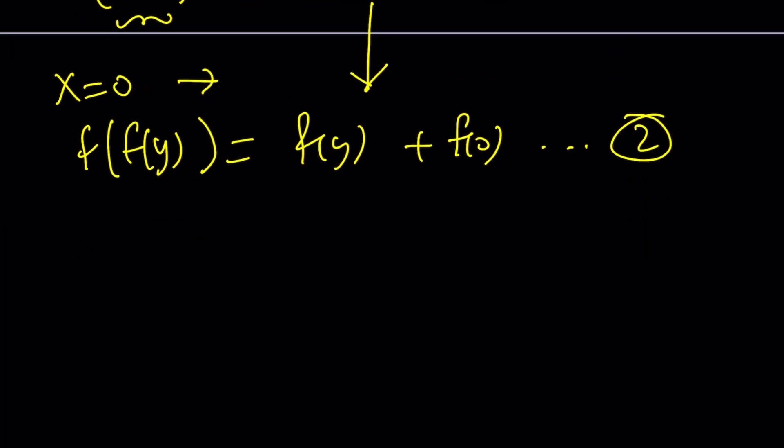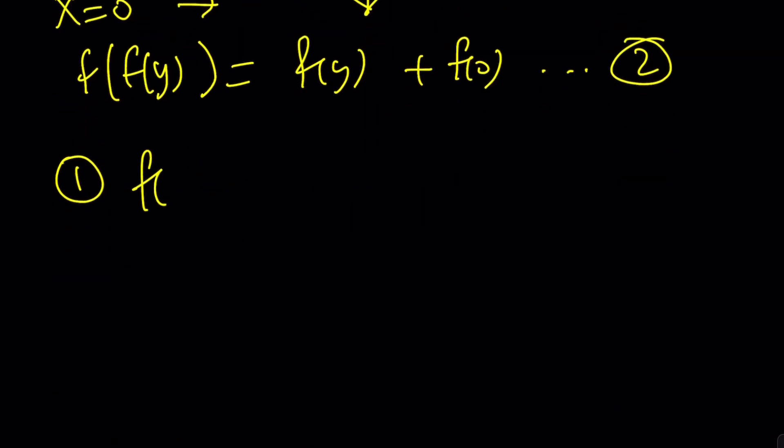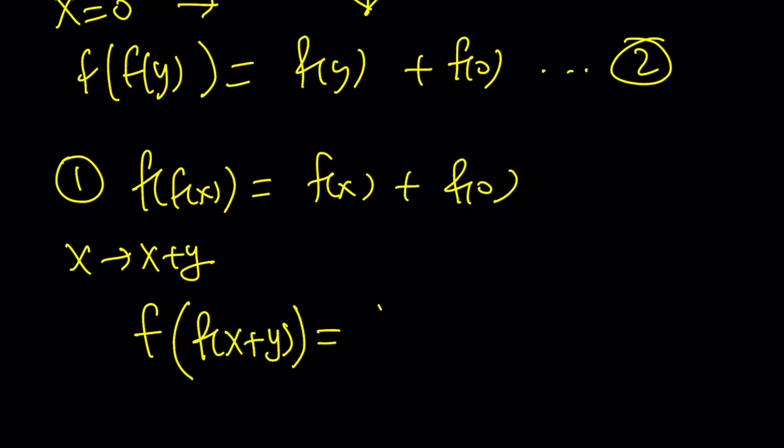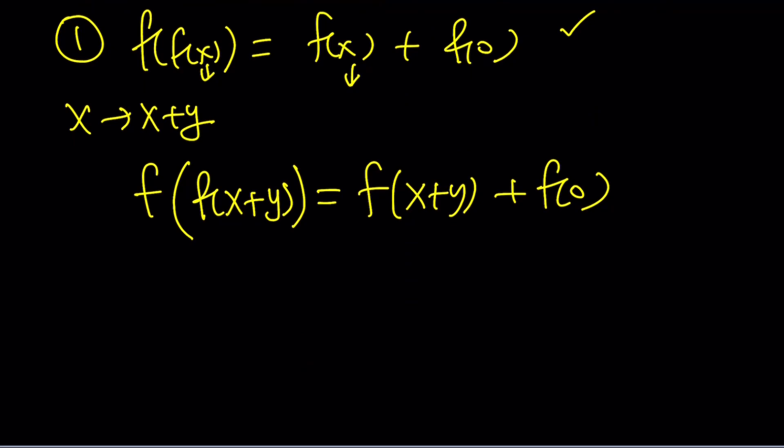Now, here's what we're going to do. We're going to take equation number 1, which is f(f(x)) equals f(x) plus f(0). This time we're going to replace x with x plus y. I don't want to write x equals x plus y because that would mean y equals 0. That's not my intention. My intention is substitution. So let's replace x with x plus y, and that gives us f(f(x + y)) equals f(x + y) plus f(0). We don't have a y in this equation, and replacing x with x plus y just changes this one and this one.